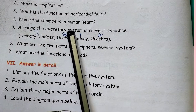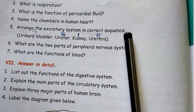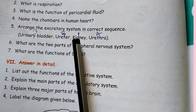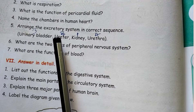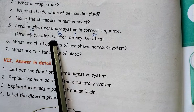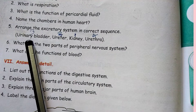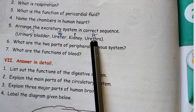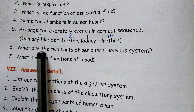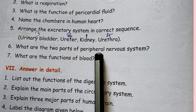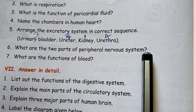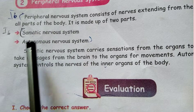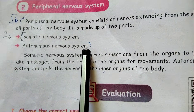Arrange the excretory system in correct sequence: first is kidney, second is ureter, third is urinary bladder, fourth is urethra. What are the two parts of the peripheral nerve system? The answer is somatic nerve system and autonomic nerve system.